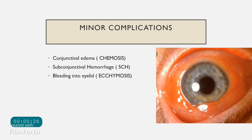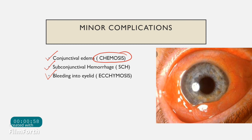First we shall discuss the minor complications. The minor complications which can occur with peribulbar and retrobulbar anesthesia are conjunctival edema, in which fluid gets collected in the subconjunctival space — called chemosis — and subconjunctival hemorrhage, abbreviated as SCH. We can also have bleeding into the eyelid tissue, called ecchymosis. In this picture you can see the ballooning or swelling of the conjunctiva coming onto the cornea, with a reddish tinge underneath due to hemorrhage.